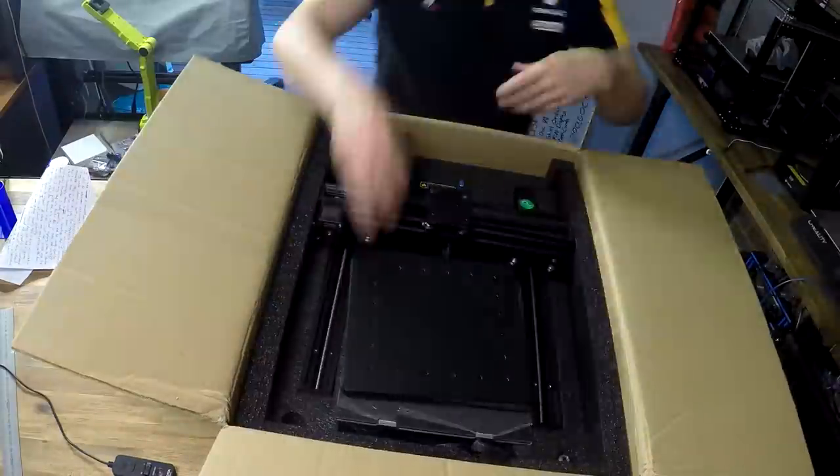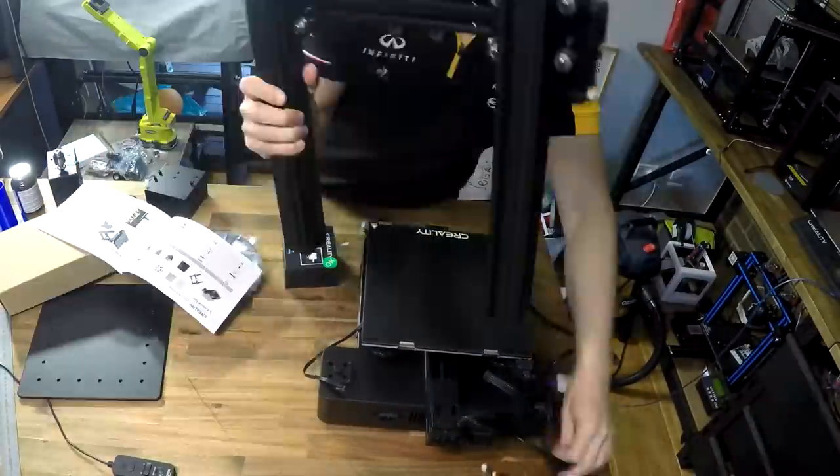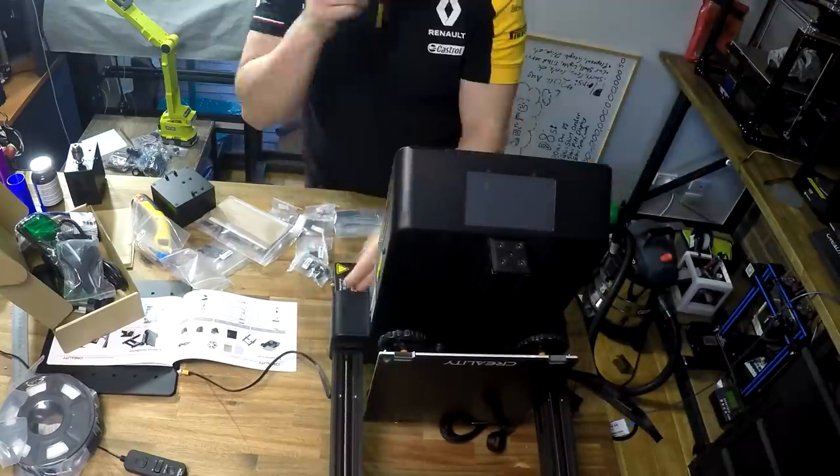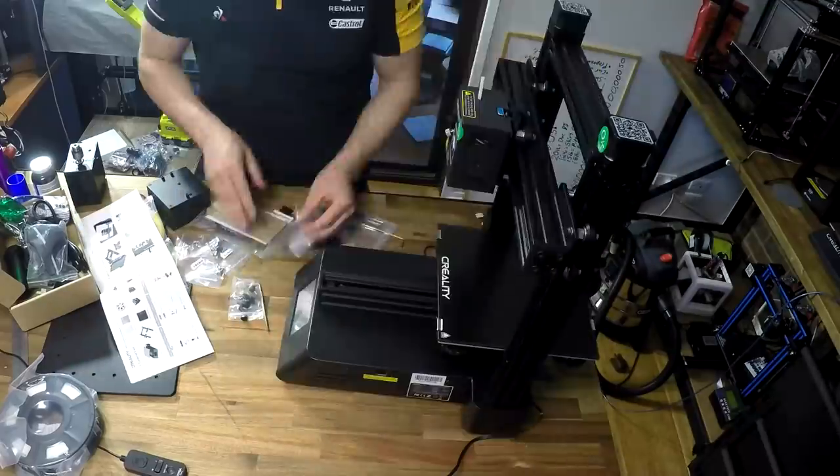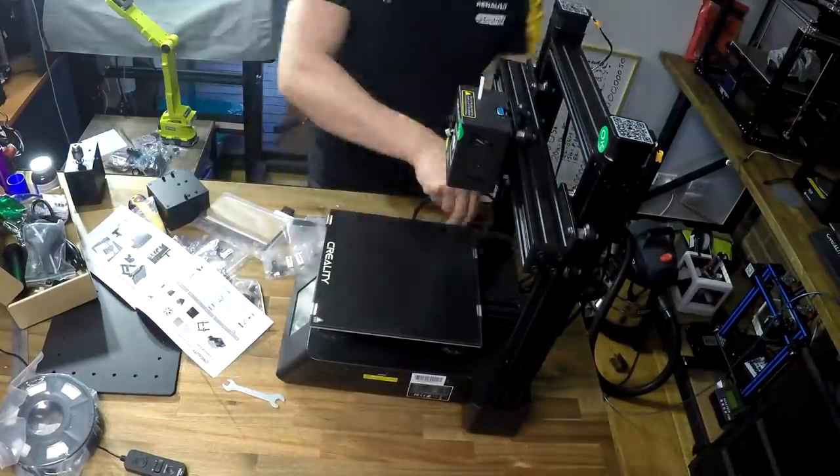This machine was well packaged, and everything arrived in good condition. Assembly was really straightforward. You attach the upper gantry to the lower base, four bolts on each side, and then two bolts for two sets of end stops, the filament holder on top of the machine, and then plug in all the electronics. The instructions were easy to read, and everything was clearly labelled.